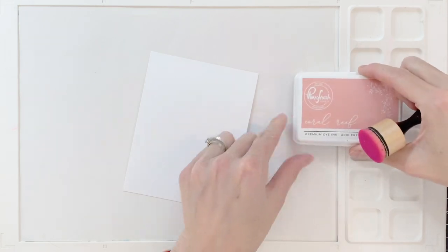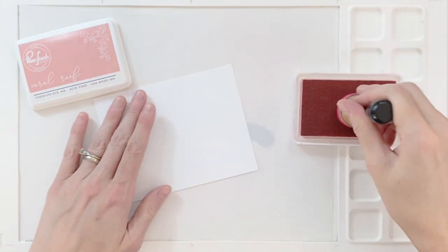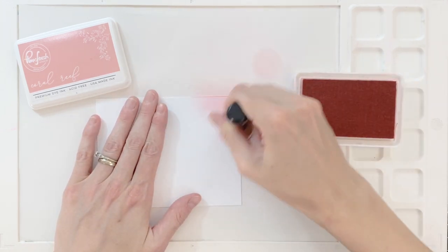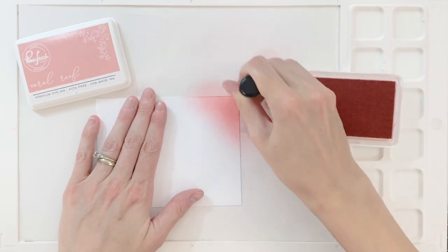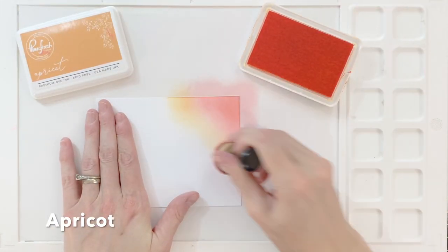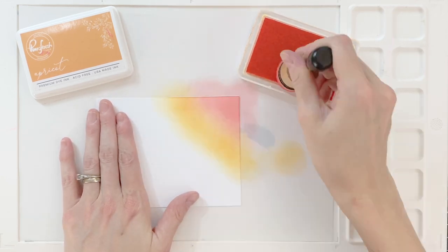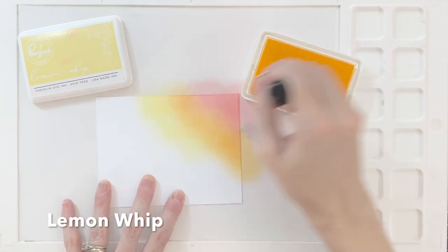I'm going to start my card by ink blending a panel that is four and one eighth by five and three eighths. So this panel is a little bit smaller than an A2 panel, but when you mount it onto an A2 card base you'll have a beautiful one sixteenth of an inch border around it. I'm going to use several Pinkfresh Studio inks to ink blend this, and I am ink blending a rainbow at a diagonal. So that's why I'm starting at the upper left corner.